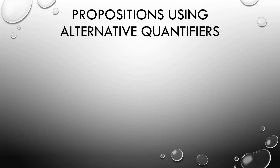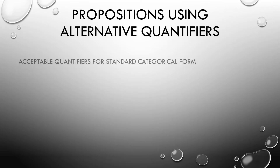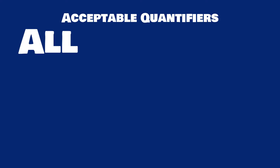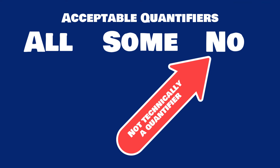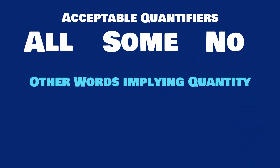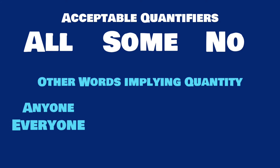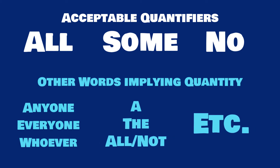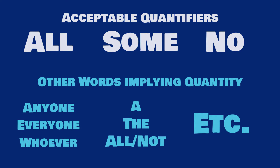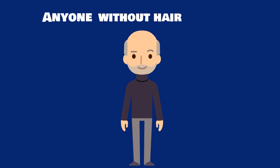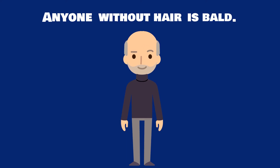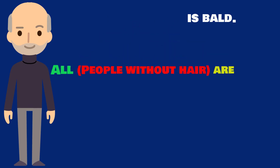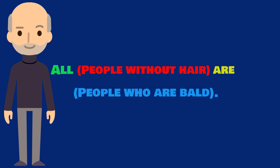Sometimes sentences already include words indicating quantity. Remove those words and replace them with the only acceptable quantifiers: all, some, or no. Words indicating quantity include anyone, everyone, whoever, the article 'a,' 'the,' 'all,' 'not,' etc. The important thing is to find the meaning. For example: 'Anyone without hair is bald' translates to 'All people without hair are people who are bald' — capturing the full meaning with all four required parts, logically clear and precise.